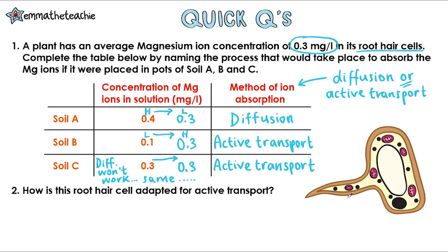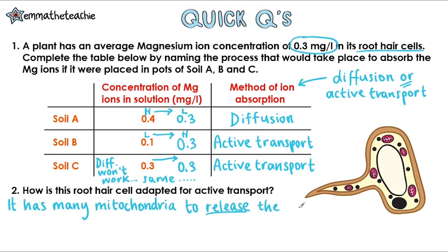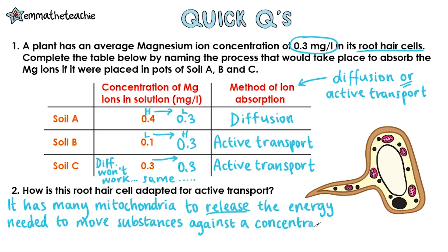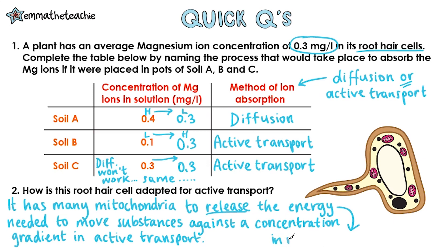Question 2: How is the root hair cell adapted for active transport? It has many mitochondria — those little pink organelles — to release the energy needed to move substances against a concentration gradient during active transport. You could also mention that the energy is released in the process of respiration. It's always good to have that extra detail.